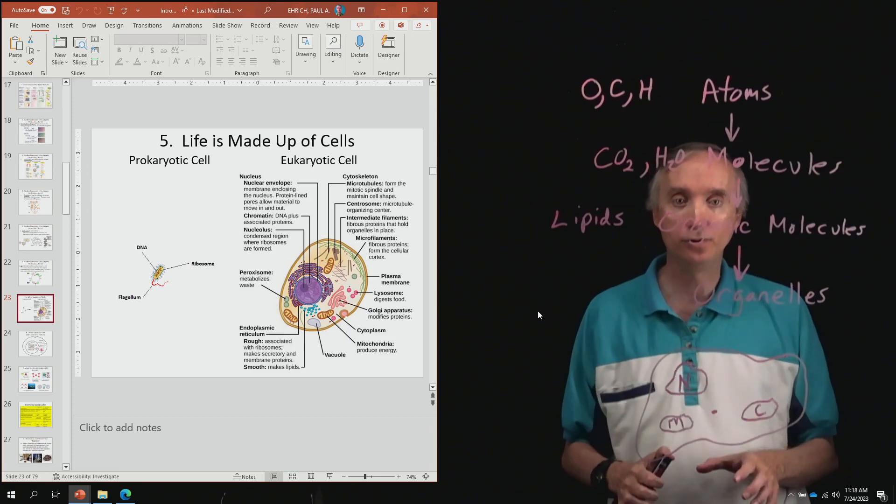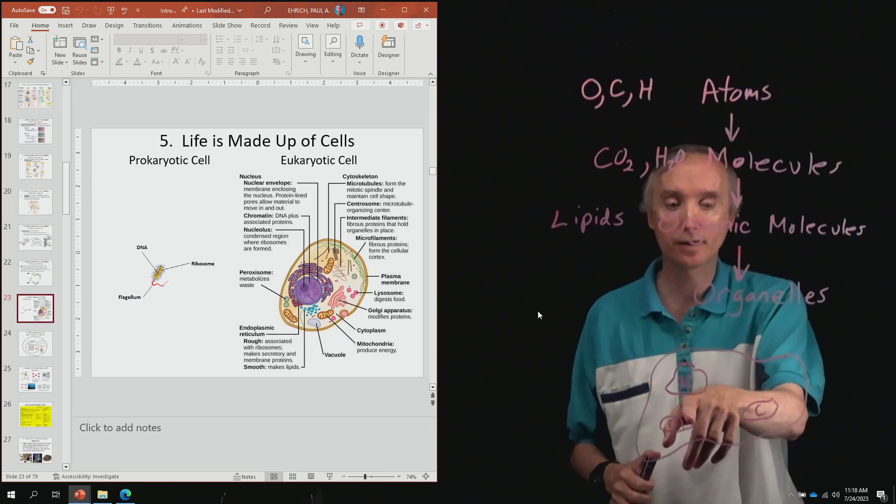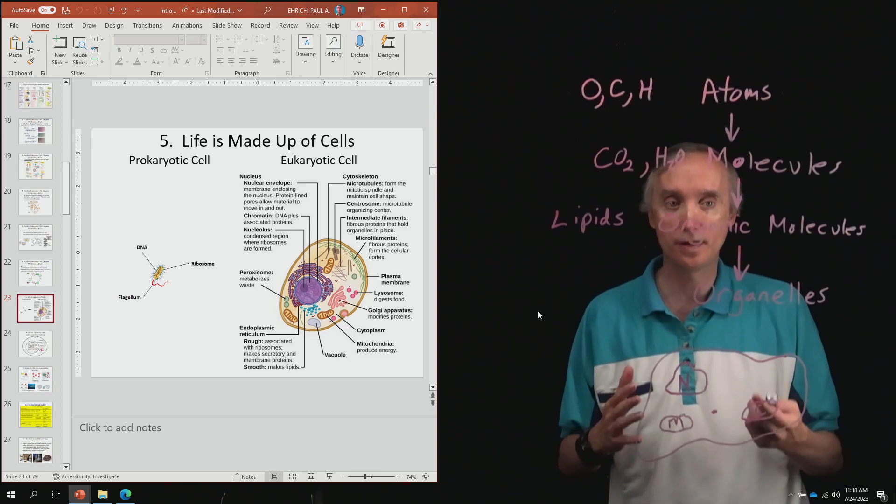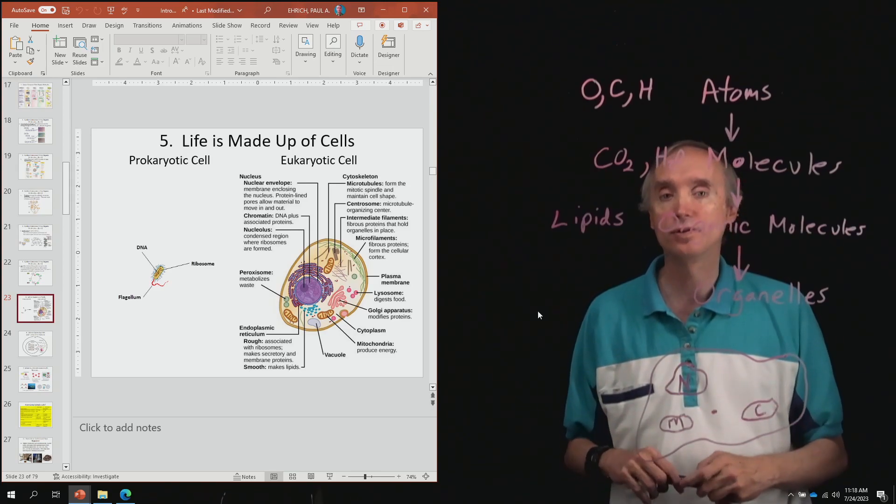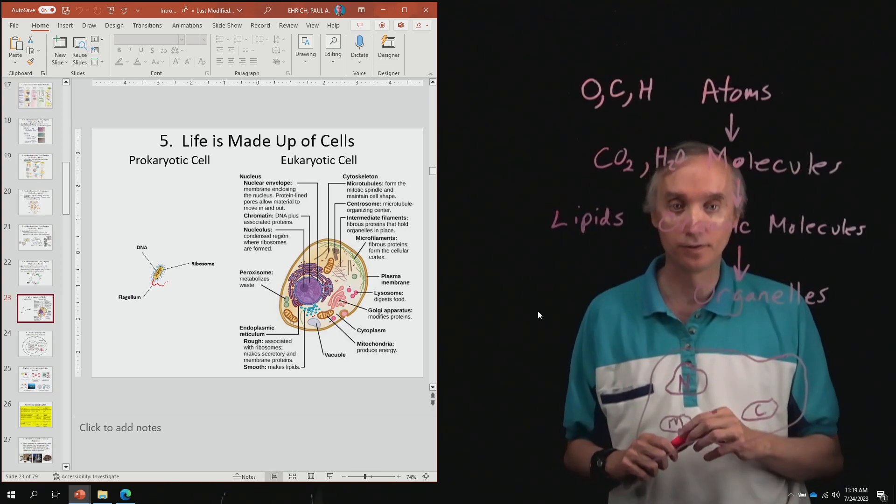And notice that the size of a bacteria is approximately the same size as an organelle. And that's going to be a clue as to where did mitochondria and chloroplasts, where did they come from? And so we're going to discuss that in another segment.